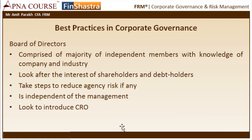The BOD should make sure that the company is doing things in the highest interest of the stakeholders, and that the management is not taking decisions which are in conflict with this larger objective. The Board of Directors should take steps to reduce agency risk, so the management should work as agents of the stakeholders and do everything in their best interest. The Board should be independent in the true sense, independent of the influence of management, and should look to introduce a risk officer within the board.